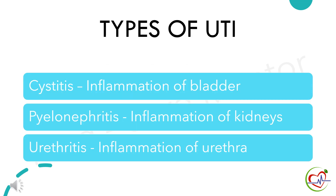There are mainly three types of urinary tract infection: cystitis, which is inflammation of the bladder; pyelonephritis, which is inflammation of the kidneys; and urethritis, that is inflammation of the urethra.